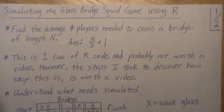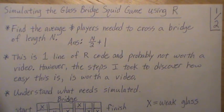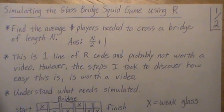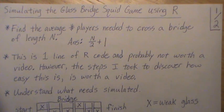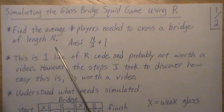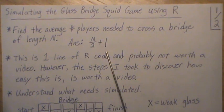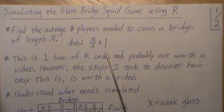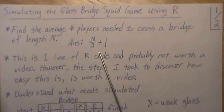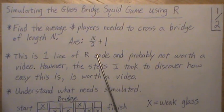Hello, this is the next video in a playlist I'm calling miscellaneous, and here we're going to simulate the glass bridge squid game using R. What we want to do is simulate the average number of players needed to cross a bridge of length n. The theoretical is n divided by 2 plus 1, and our simulated results are consistent with this.